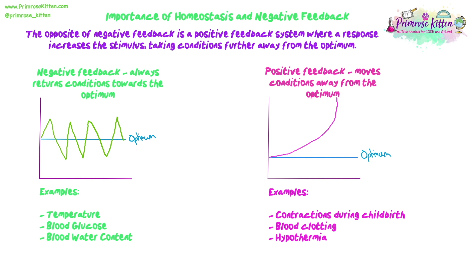Hypothermia is also an example of positive feedback. If your temperature drops really rapidly and too low too quickly for your body to bring it back up, your normal negative feedback can't fix your body temperature. Your temperature gets too low, causing your metabolic rate to become really low, which means respiration and other reactions can't happen as fast, so they're not able to bring your temperature back up. Your temperature drops even lower — you just get colder and colder. That's why hypothermia is so dangerous. If you see graphs showing this, negative feedback oscillates around the optimum whereas positive feedback moves exponentially away from it.